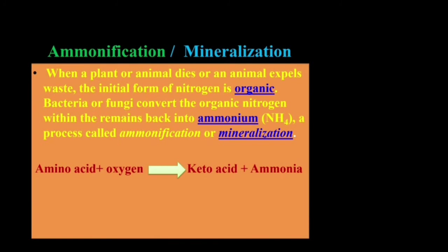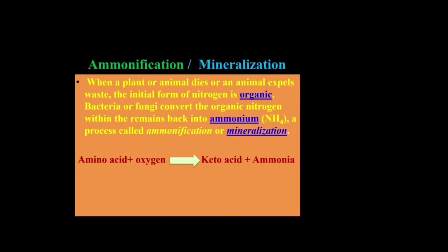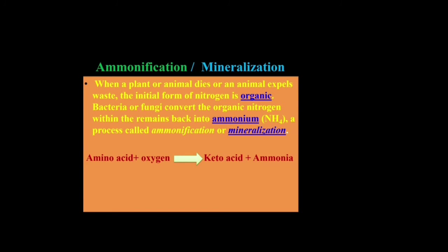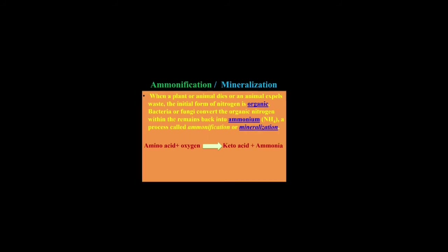Ammonification is the process involving the conversion of complex organic nitrogenous compounds present in the dead bodies of plants and animals into ammonium ions. It is carried out by bacteria present in the soil, like Bacillus ramosus. This process is also called mineralization.